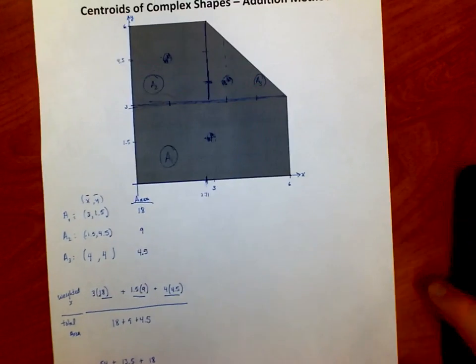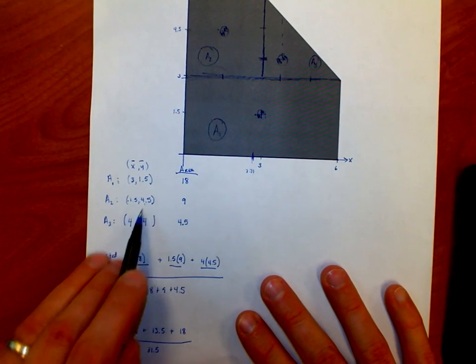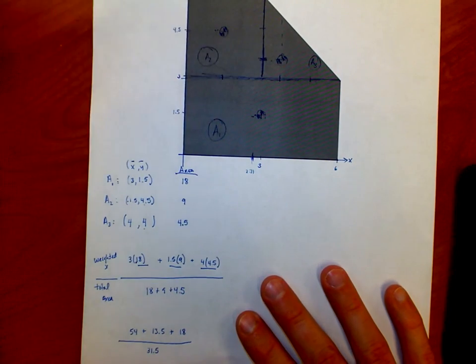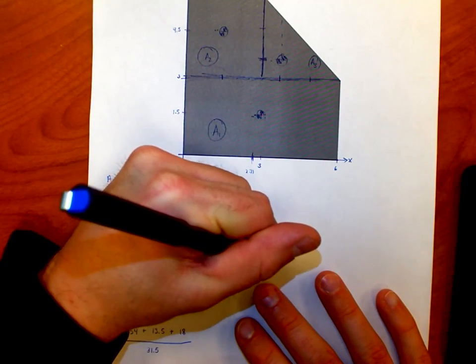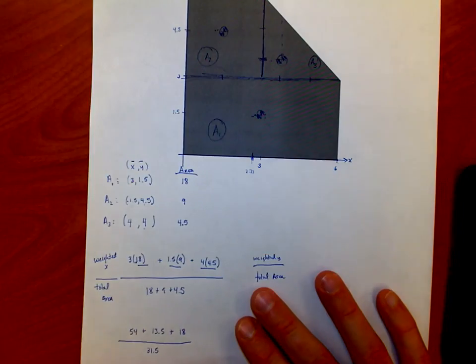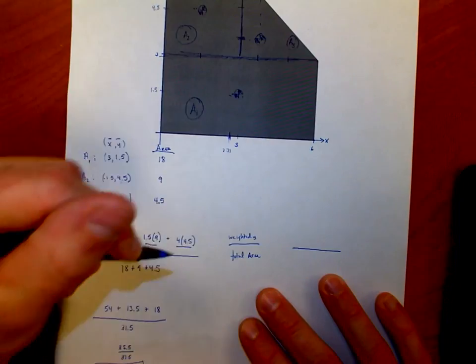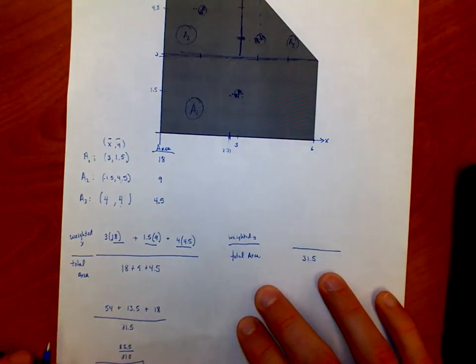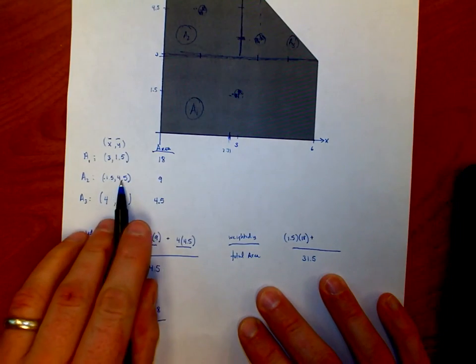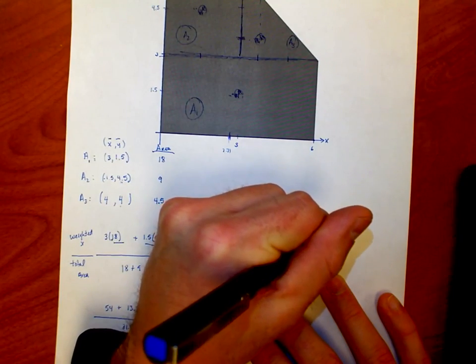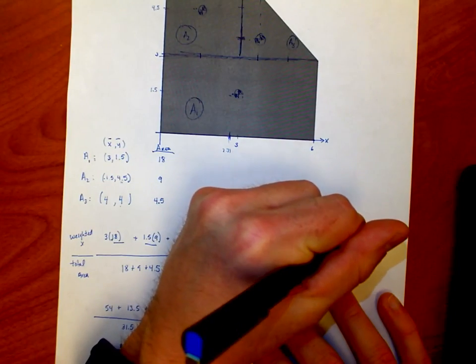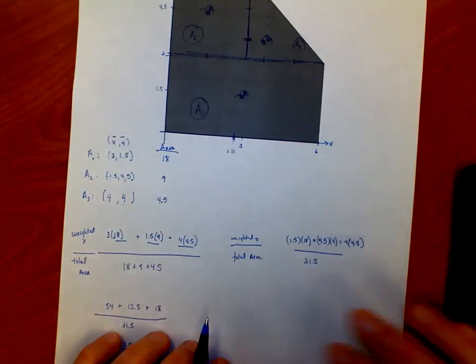Now I need to do the same thing with the Ys. The three Y coordinates I have are 1.5, 4.5, and 4. But this Y coordinate should pull more weight than this one, which should pull more weight than this one. So how do I do that? I take into account the areas. So now it's going to be the weighted Y over the total area. Total area we already got, it's 31.5. So now let's go through: the 1.5 has an area of 18 attached to it, the 4.5 has an area of 9, and the 4 has an area of 4.5.